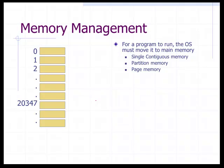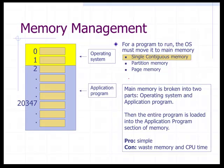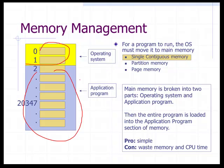For a program to run, the operating system must move it into main memory, and it does so based on three possible strategies: single-continuous memory, partition memory, or page memory. Single-continuous memory breaks up main memory into two sections — one for the operating system and one for the application program.